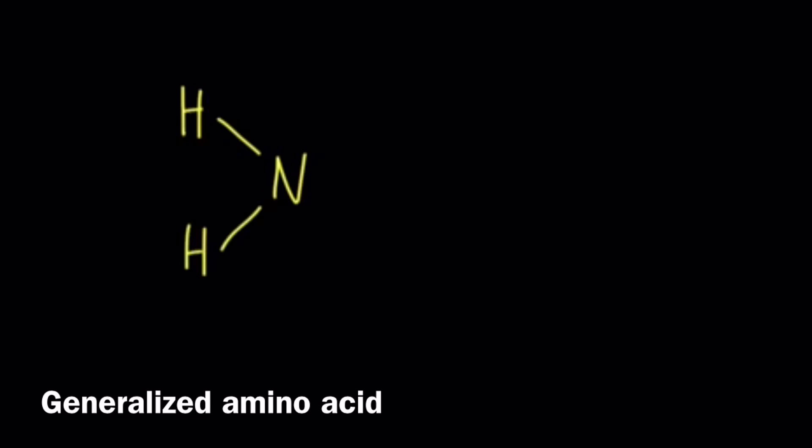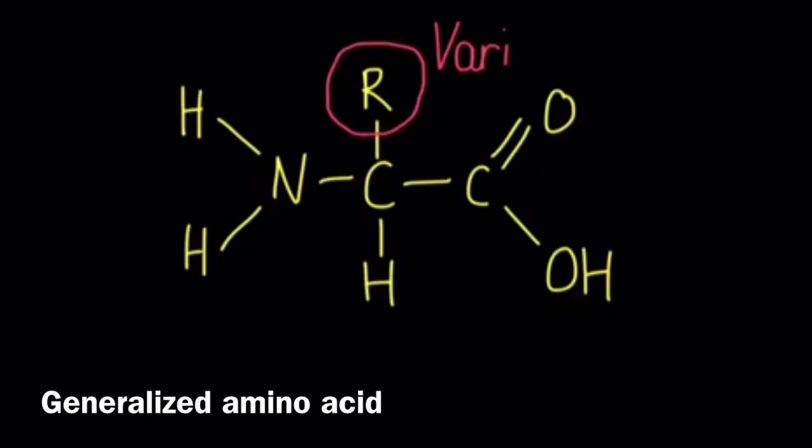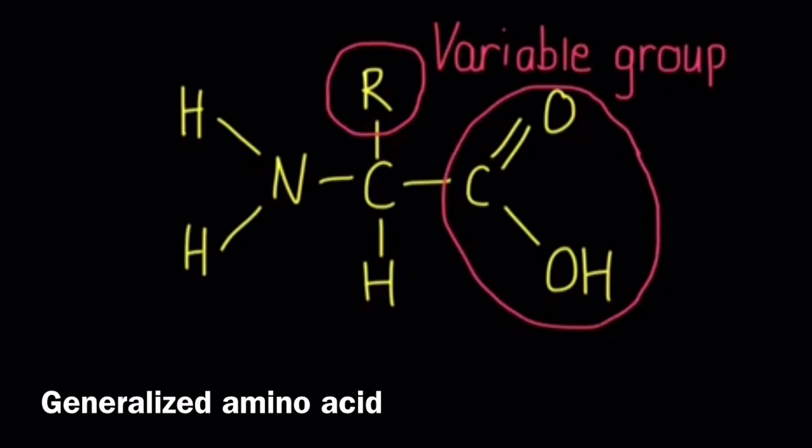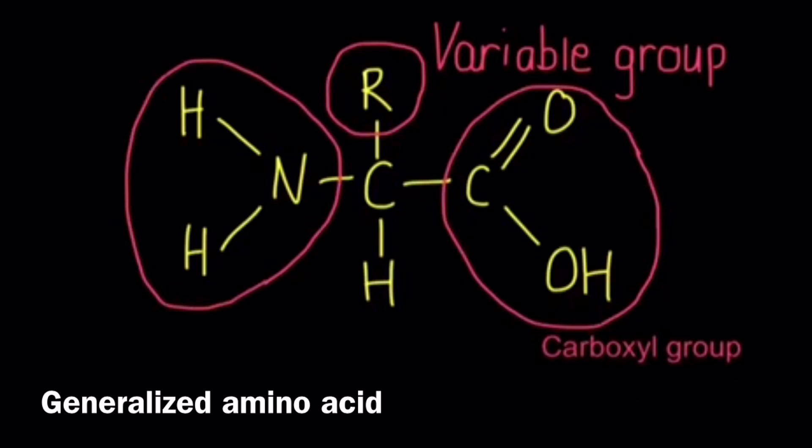Then we have a generalized amino acid. The R on the central carbon is a variable group and can be any other element or group of elements that are attached to that central carbon. On the right hand side we have the carboxyl group and on the left hand side the amine group.